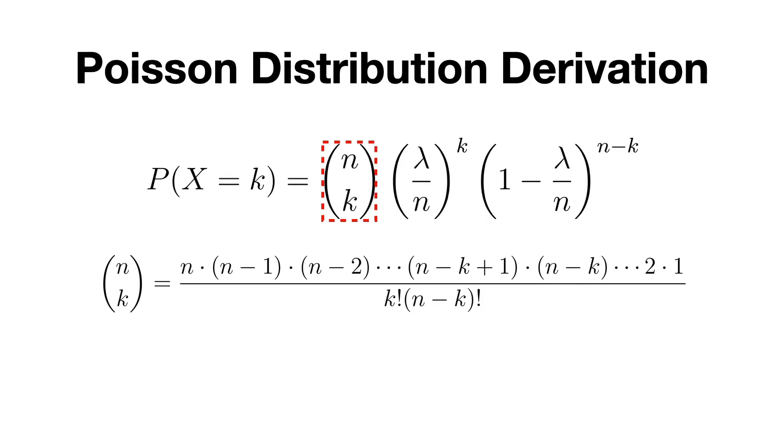Next, we simplify the binomial coefficient and rewrite it as follows by expanding it. Next, we eliminate those terms here that are found in both the numerator and the denominator. Now, because n is very large compared to k, we can ignore it in each term and thus we can approximate the numerator as n to the power of k. So, we obtain the following.